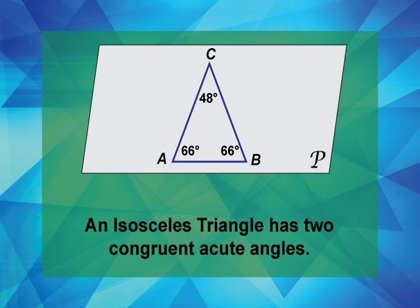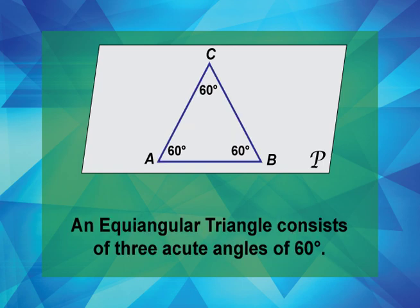An equiangular triangle consists of three acute angles of 60 degrees. This is an example of an equiangular triangle.